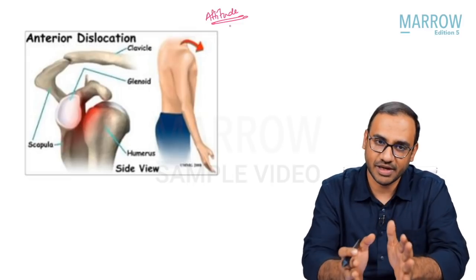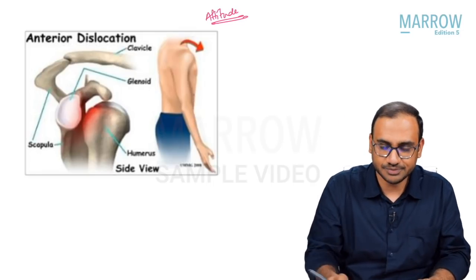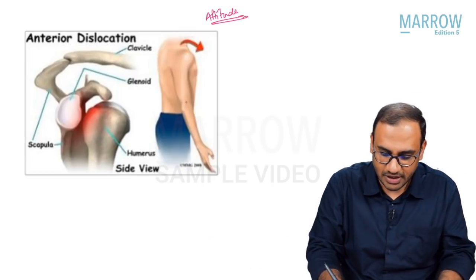The attitude of anterior dislocation of the shoulder is the arm abducted and externally rotated. This is how the patient will present. When there is an attitude, the patient cannot perform the opposite action — so the patient cannot adduct and internally rotate. Examiners may tell you the patient has an attitude of abduction and external rotation, or that the patient has difficulty adducting and internally rotating. Please be careful how you parse those questions.